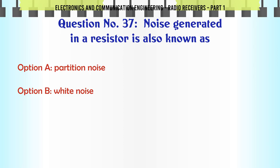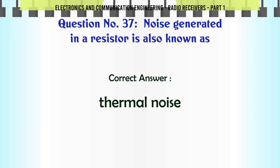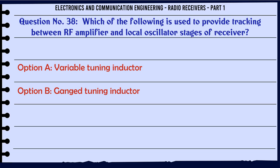Noise generated in a resistor is also known as: A. Partition noise. B. White noise. C. Thermal noise. D. Shot noise. The correct answer is thermal noise.